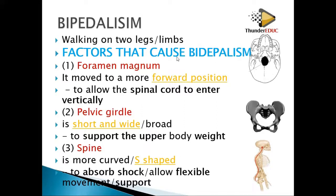So the factors that cause bipedalism are: number one, position of foramen magnum; number two, the pelvic girdle — short and wide; number three, the spine — more curved. Bipedalism is walking on two limbs. The foramen magnum position, the short and wide pelvis, and the curved spine are the three key factors.